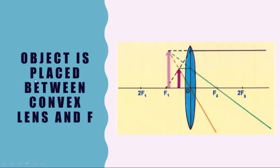Number six: when the object is placed between the convex lens and the principal focus. You may recall that in the last lesson we studied the convex lens as a magnifying glass — this is the same thing as the sixth case of image formation. The three rays after passing through the convex lens diverge, and when we extend these rays in the backward direction, we get an upright, virtual, and magnified image of the object. This image is behind the object and on the same side of the lens — this is the case of a magnifying glass.